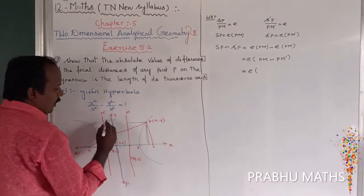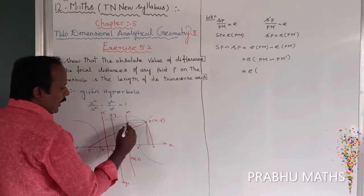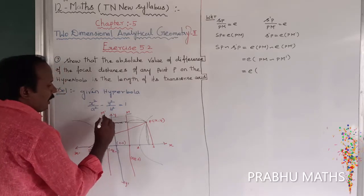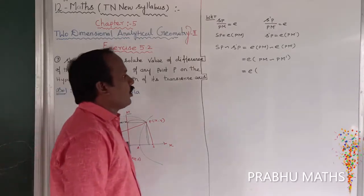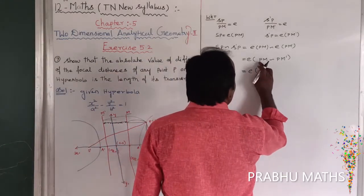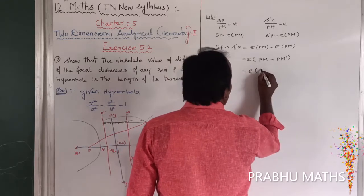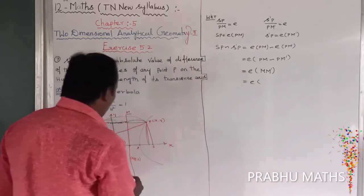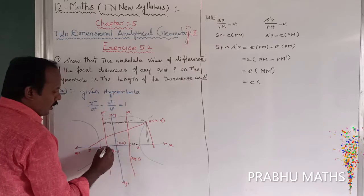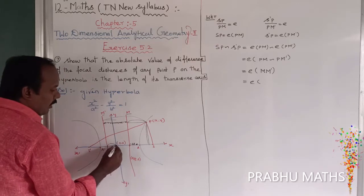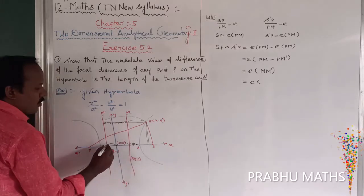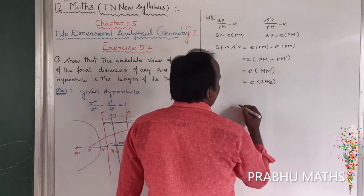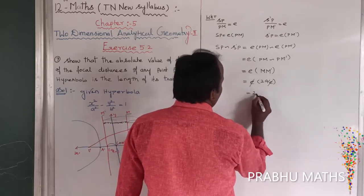PM minus PM dash — that is called the full distance. The value of PM minus PM dash is going to M minus M dash. M minus M dash is going to the distance of the points A/e comma 0 and minus A/e comma 0. So that is A by E minus (minus A by E), which is two times A by E. So E cancels, and that is equal to 2A.